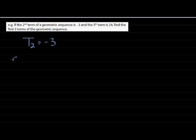The second term equals negative 3. In other words, if I have a times r to the power of 2 minus 1, which is 1, I'll have negative 3. So in the second term, I've multiplied my first term with the constant ratio once. This is my first equation.